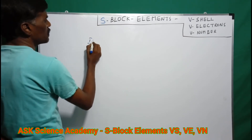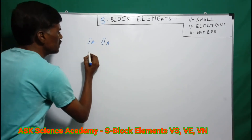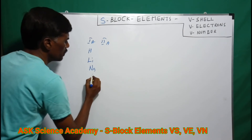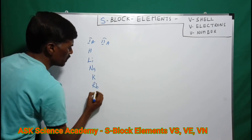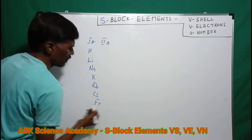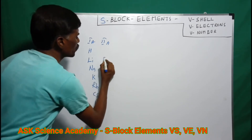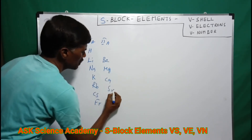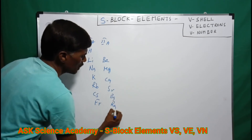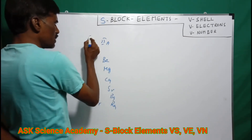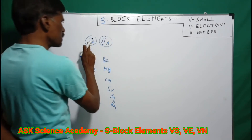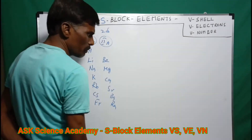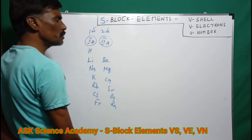Group 1A elements are: Hydrogen, Lithium, Sodium, Potassium, Rubidium, Cesium, and Francium. Group 2A elements are: Beryllium, Magnesium, Calcium, Strontium, Barium, and Radium.